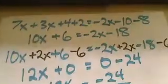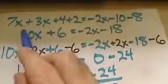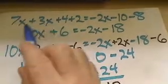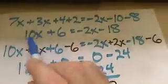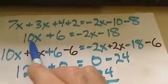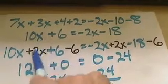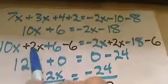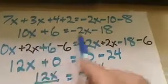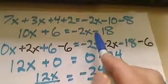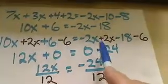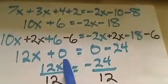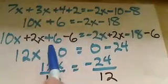Let's see exactly what we did. We found like terms because they have the same exact variable. Then we added them using only the numerical coefficients — the letter stays the same. Once we have done everything we can do to both sides of the equation, we start doing opposite operations to both sides so the equation stays balanced.